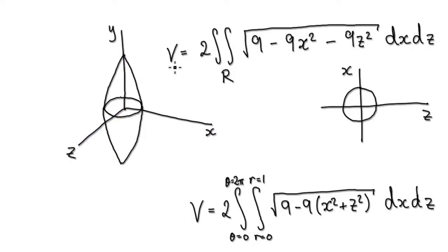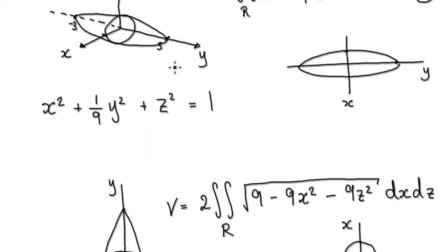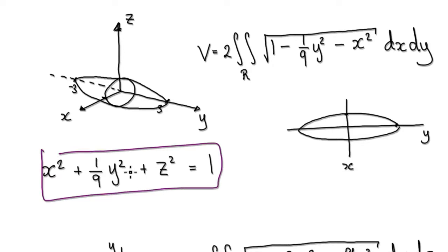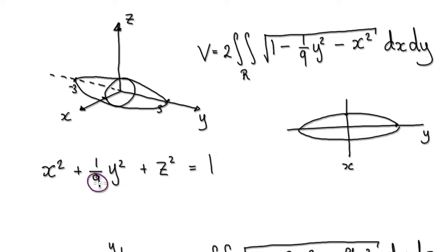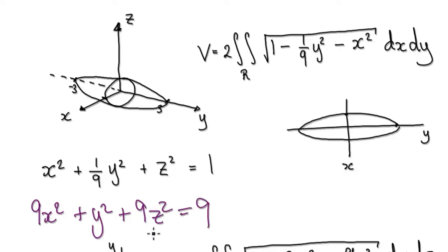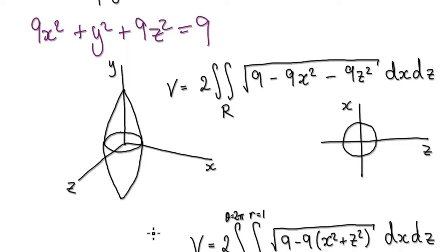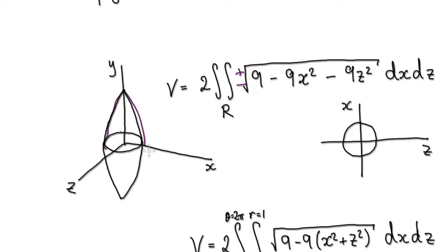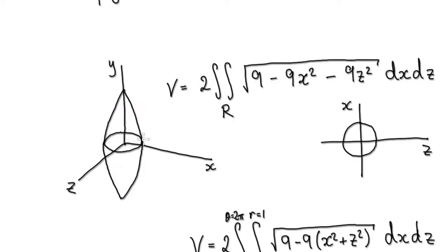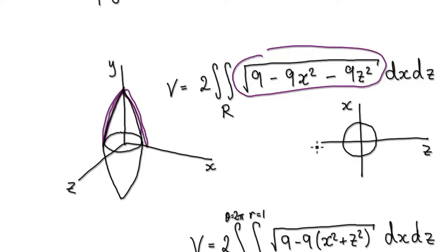Looking at the equation, if you want the surface, just make y the subject. Multiply everything by 9: 9x² plus y² plus 9z² equals 9, then rearrange to make y the subject. That gives you y equals the square root of 9(1 minus x² minus z²). We only care about the positive surface and ignore the negative one — later we multiply by 2 to get the whole ellipsoid. The region of integration is now a perfect circle of radius 1.